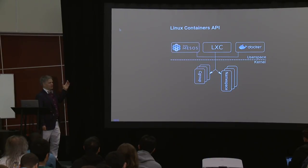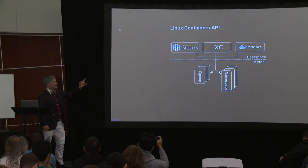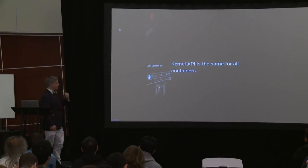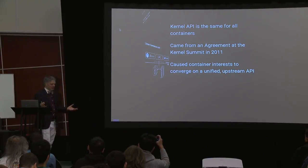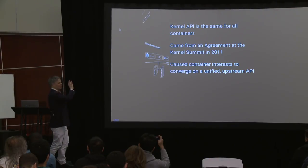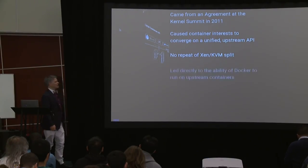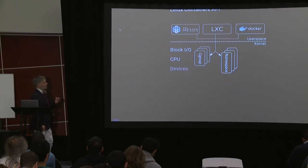The Mesos container orchestration system does it, and all new orchestration systems still use this interface. This is quite an achievement compared to hypervisors — Xen and KVM use completely separate in-kernel orchestration subsystems and work in completely separate ways. Getting all container people to agree to use the same interface is one of the great achievements of containers, going back to 2011 when we came to this agreement at the kernel summit. This API convergence meant that whether you worked for Docker, Rocket, or LXC, you were all talking about the same thing. We didn't bifurcate our development resources into two separate subsystems like Xen and KVM did, and it led directly to the ability of Docker to run upstream.